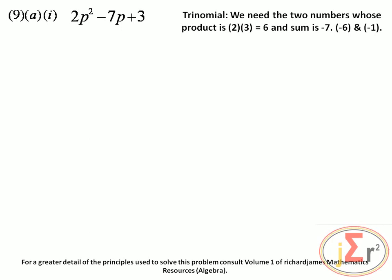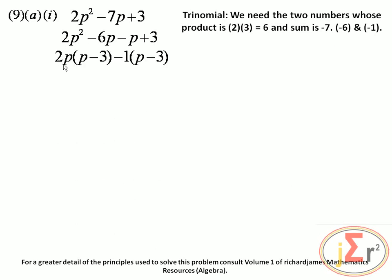We write the expression as a quadratic in four terms and use factorization by grouping. Taking the first two terms, the common factor of 2p is identified: 2 goes into 2 and 6, and p goes into p squared and p. So 2p into 2p squared gives p, and 2 into 6 gives 3.